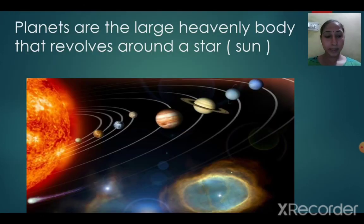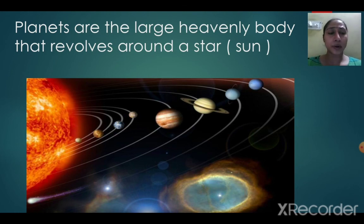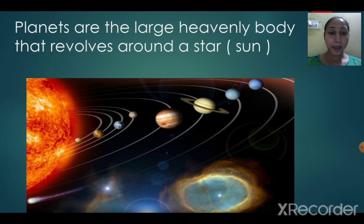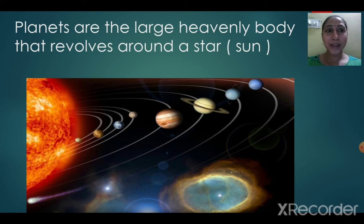Let's come to the next slide: planets. What are planets? We live on planet Earth. A planet is a heavenly body that revolves around a star. Earth revolves around the star sun, so Earth is a planet. There are a total of eight planets in our Milky Way galaxy — four inner planets and four outer planets.